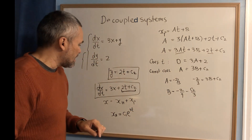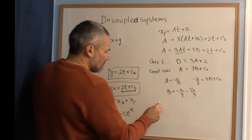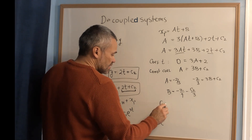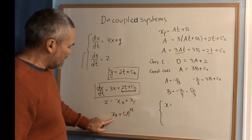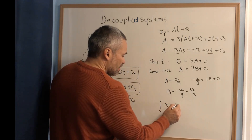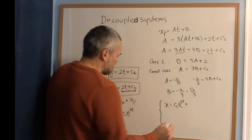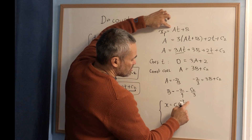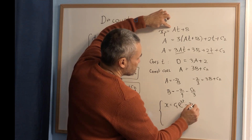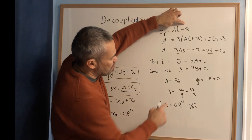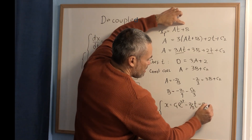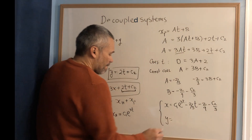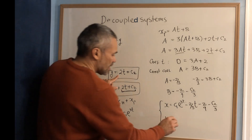So the solution for x is the homogeneous part c1 e to the 3t, plus the particular solution: a is negative two-thirds times t, plus b which is negative 2/9 minus c2 over 3. And y equals 2t plus c2.